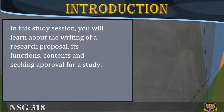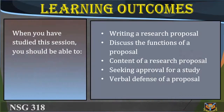In this study section, you will learn about the writing of a research proposal, its functions, contents, and seeking approval for a study. The learning outcomes for Study Section 5 include being able to write a research proposal, discuss the functions of a proposal, the contents of a research proposal, seeking approval for a study, and the formal defense of a proposal.